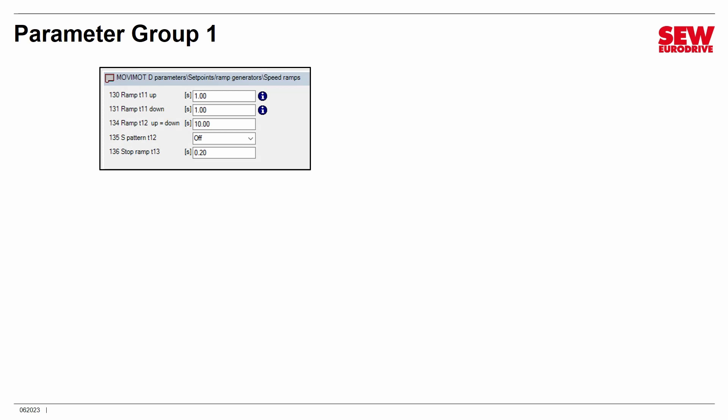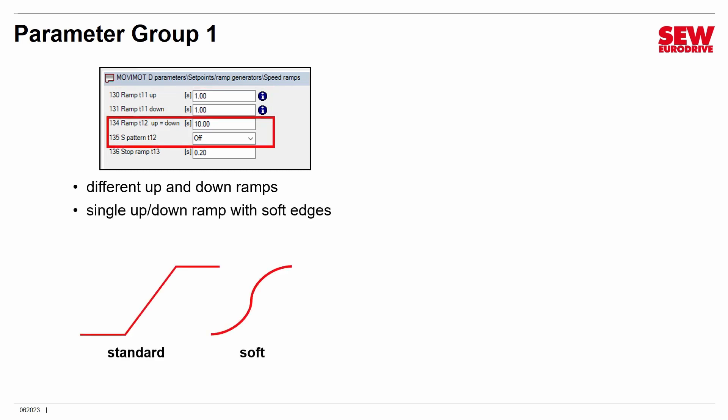Let's start with Parameter Group 1, which includes ramps. This gives you a lot more flexibility in how you speed up and slow down. Instead of just a single ramp from the T1 dial, you now have different up and down ramps — note the 'I' symbols next to these two parameters, meaning you must have the T1 dial disabled to change them. You calculate values using the same equation from earlier sessions. You also have a single up-down ramp with programmable soft edges — S-ramps — where acceleration and deceleration are more gradual and gentle.